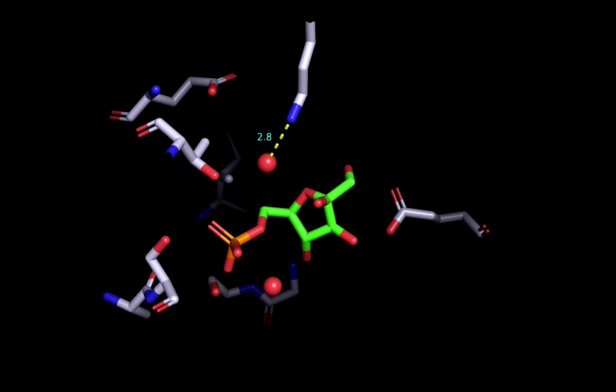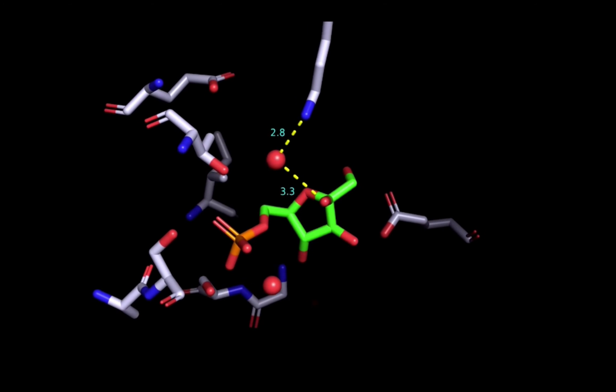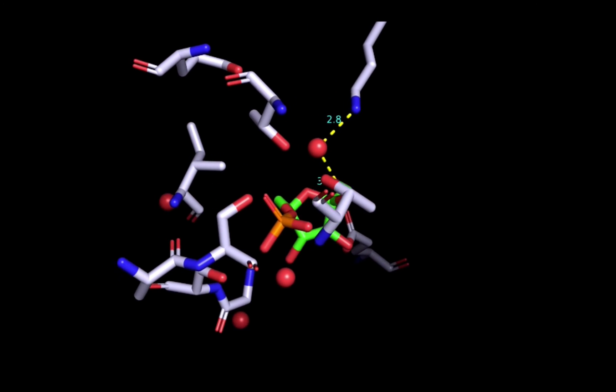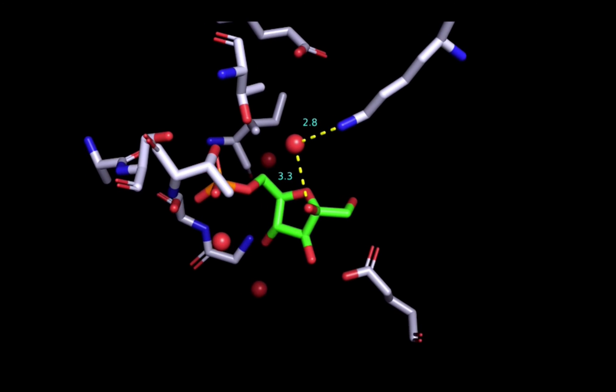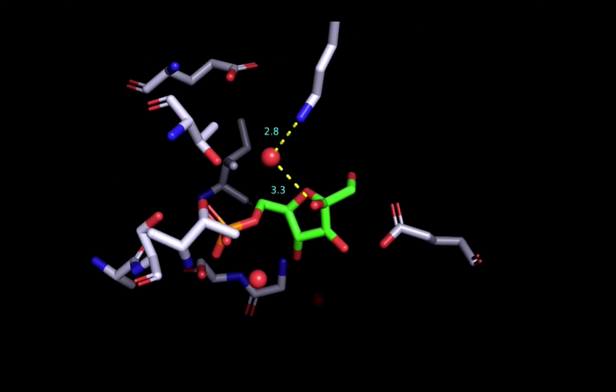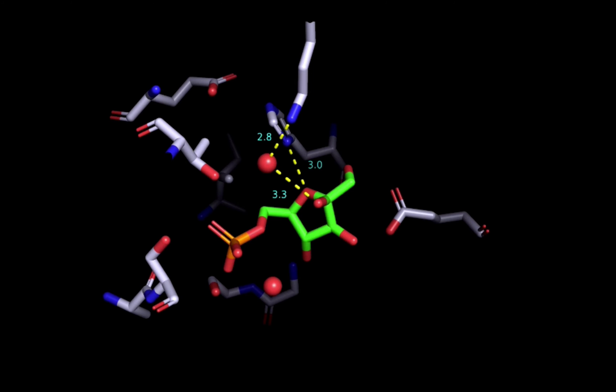This allows the ring to open up with the help of the histidine residue we looked at just a moment ago. Here is the open chain form of glucose 6-phosphate. Notice the aldehyde and the phosphate group here.